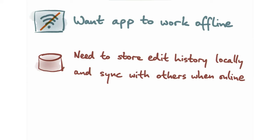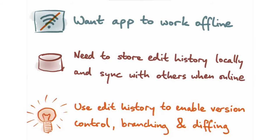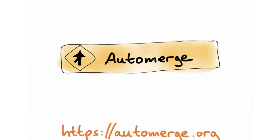Being able to edit a document offline means there has to be some way of capturing the changes you made and storing them so that later, when you come back online, we can sync those changes with any other collaborators. That means we fundamentally need some way of tracking changes in order to do synchronization. Our insight is: if we're already tracking changes to do synchronization, why not use that same change-tracking mechanism to also enable version control use cases — like branching workflows with merging and diffing?